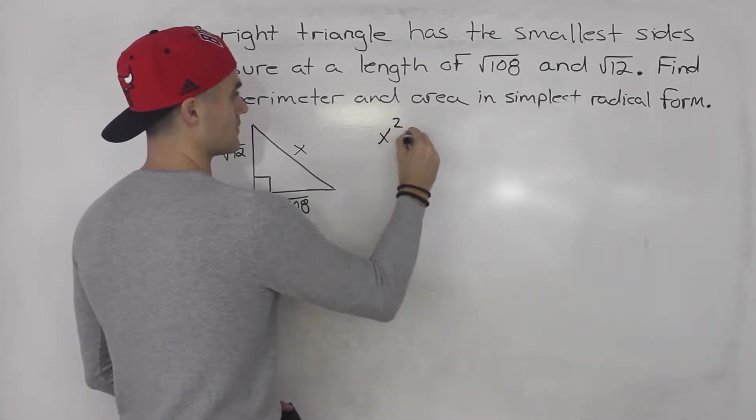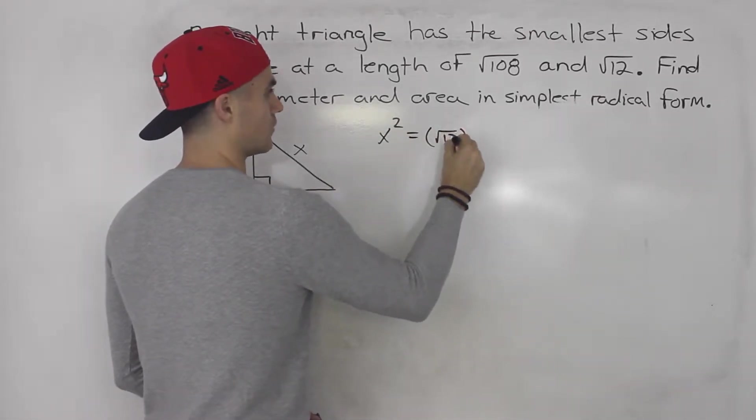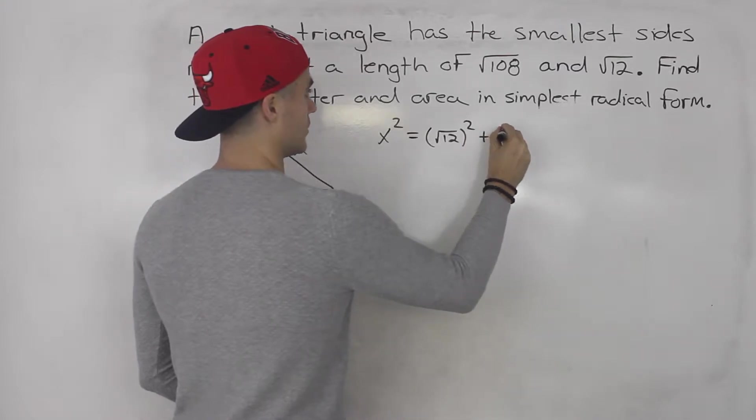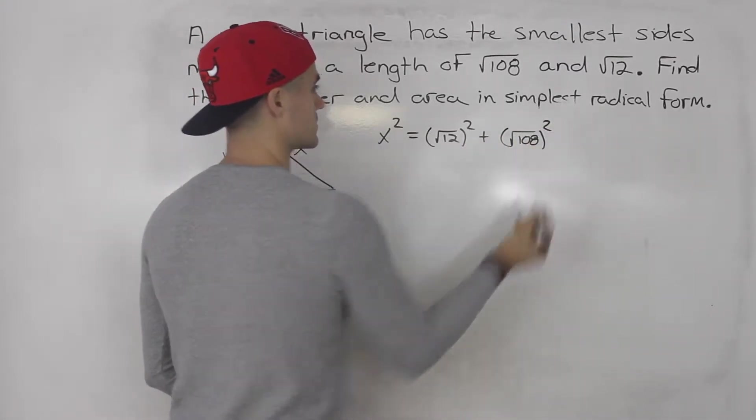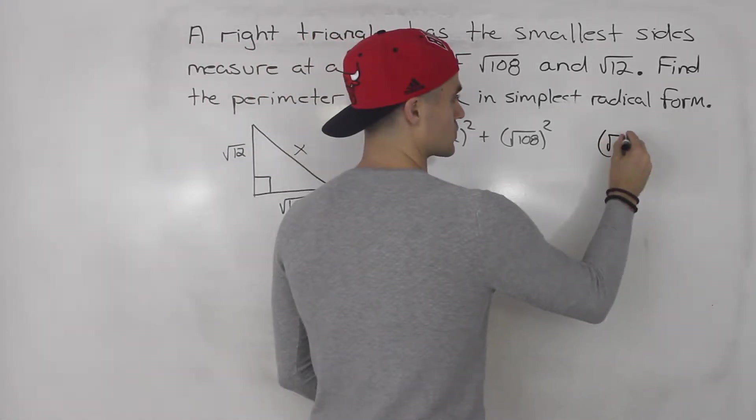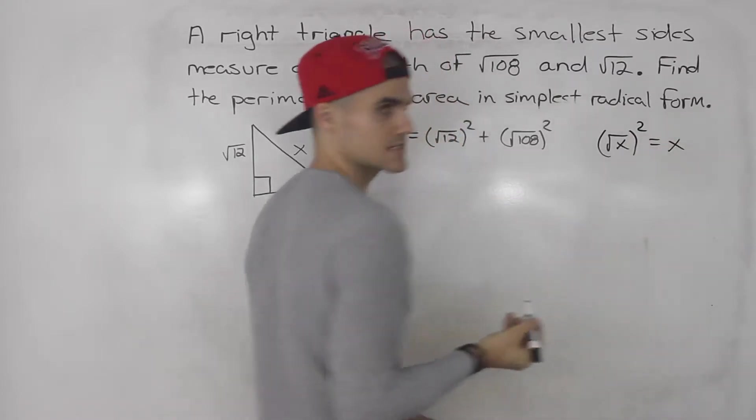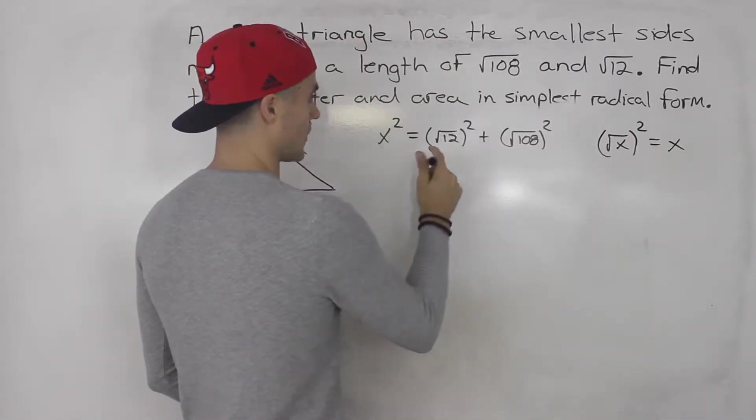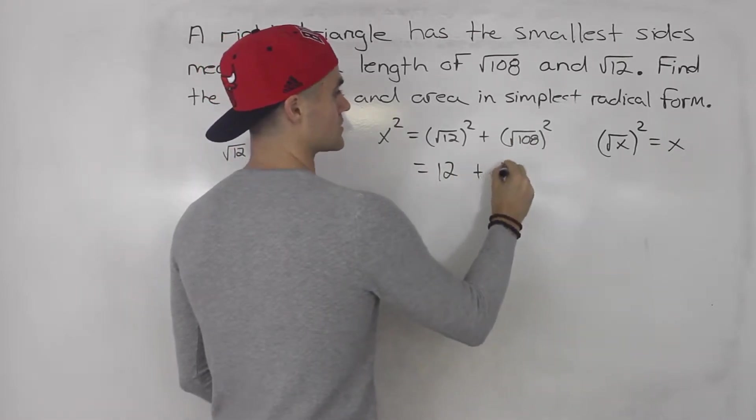So x squared is basically equal to root 12 squared plus root 108 squared. And as we know, the square root of anything squared is just whatever is inside the radical. So root 12 squared is just 12, and then root 108 squared is just 108.